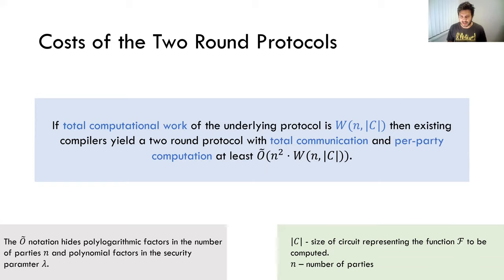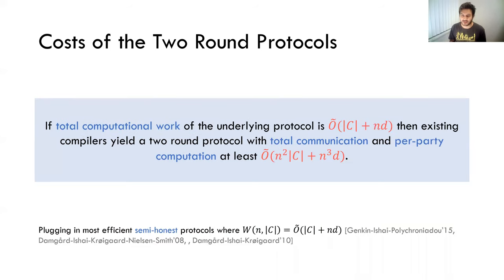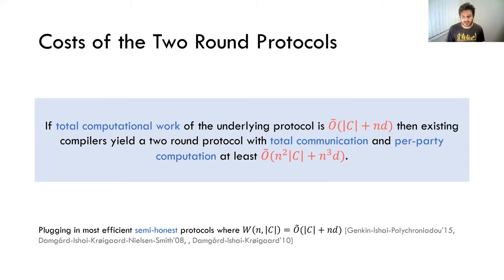This O-tilde hides polylog factors in the number of parties or polynomial factors in the security parameter. So what does this n² overhead mean when starting from the best or most efficient protocols? If we start with compilers in the semi-honest setting where total computational work is only O-tilde of C plus some additive factor, then existing protocols give you total communication or per-party computation of O-tilde n² · C. So the question we ask in this work is: is this multiplicative overhead actually inherent?